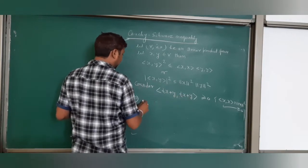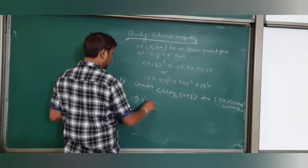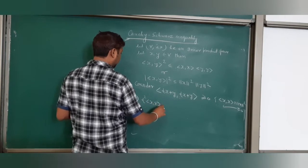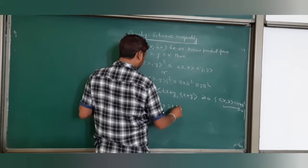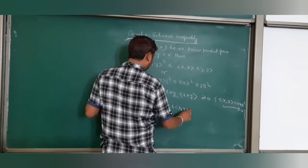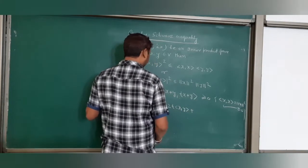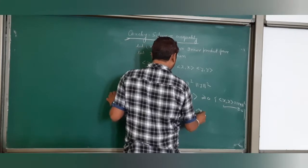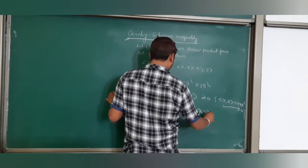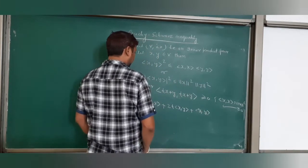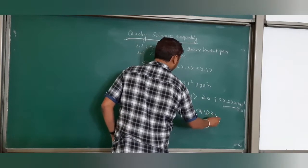The inner product of tx with tx means t squared times inner product x, x plus 2t times inner product x, y plus inner product y, y, which is greater than or equal to 0.